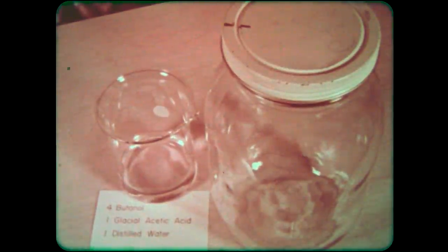Another method of ascending chromatography uses a large mouth gallon jar. The solvent is a four to one to one mixture of butanol, glacial acetic acid, and distilled water. It is poured to a depth of about half an inch.